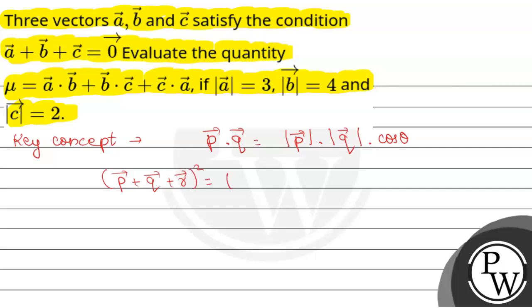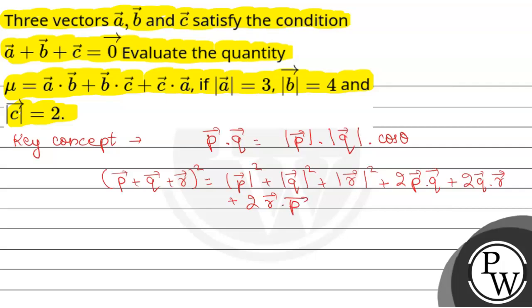If we square their sum, we get: mod of vector p whole square plus mod of vector q whole square plus mod of vector r whole square plus 2 times vector p dot vector q plus 2 times vector q dot vector r plus 2 times vector r dot vector p.